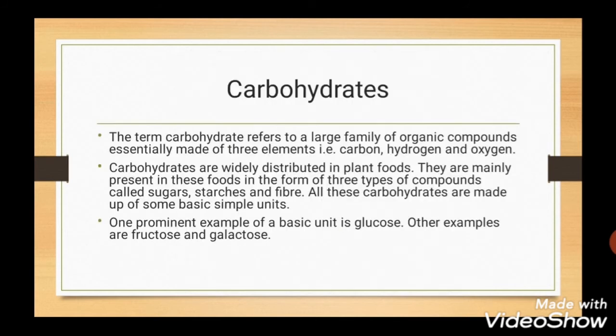Carbohydrates. Carbohydrates are organic compounds made up of three elements: carbon, hydrogen and oxygen. They are widely distributed in plant foods in the form of three types of compounds — sugars, starches and fibers. All these carbohydrates are made up of some basic simple units; one of them is glucose, and others are fructose and galactose.